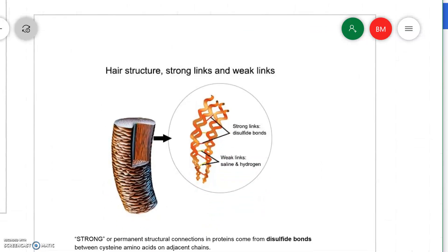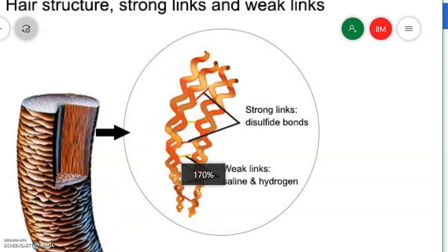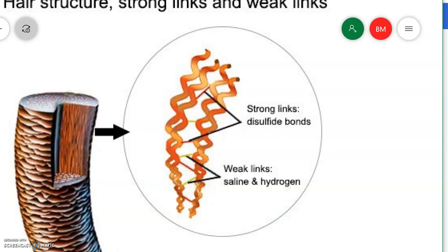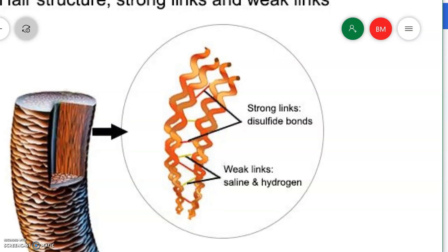But this is not permanent. If you want to make permanent changes to the structure of proteins, you need to affect links in the hair proteins that are stronger. Between cysteines on different protein chains, you can form strong disulfide bonds. These are permanent and are difficult to break. Things like the charge attractions and hydrogen bonds are fairly easy to change just with wetting and drying hair.